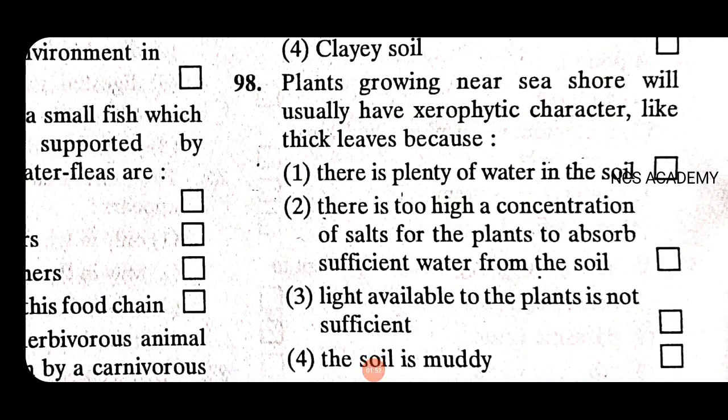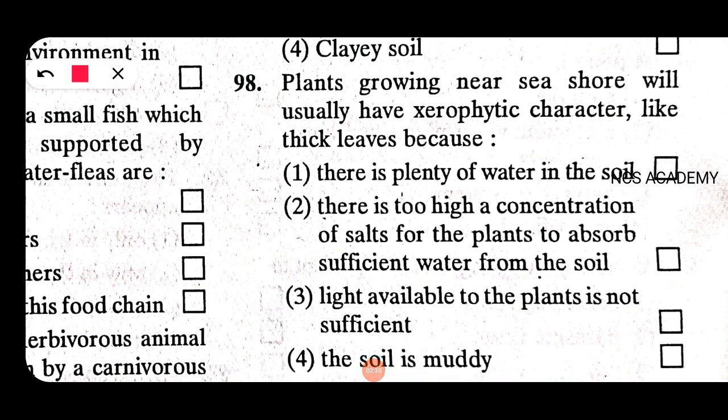Plants growing near the seashore will usually have xerophytic characters like thick leaves, because there is too high a concentration of salt for the plants to absorb sufficient water from the soil. So the right option is 2 — it's the right answer.